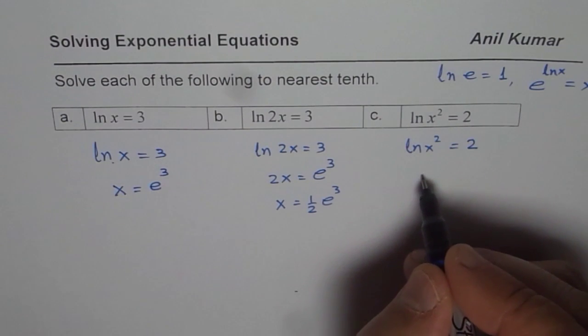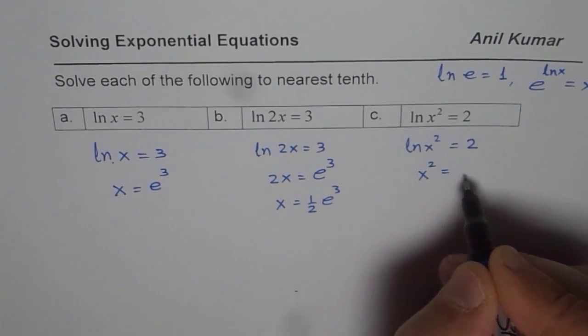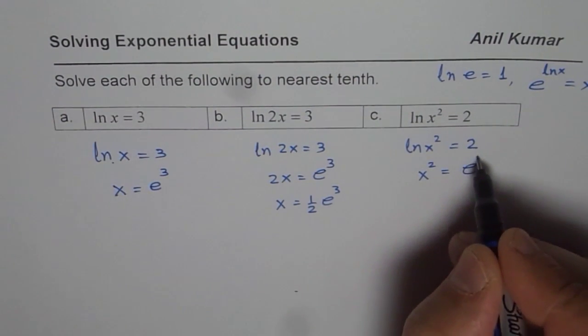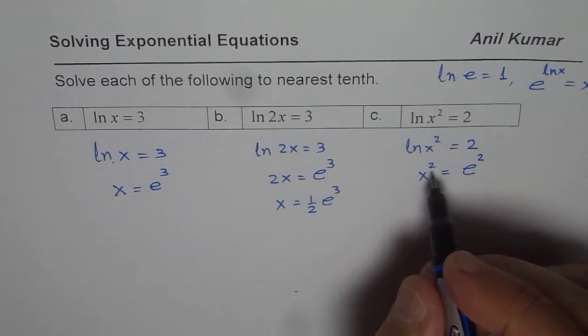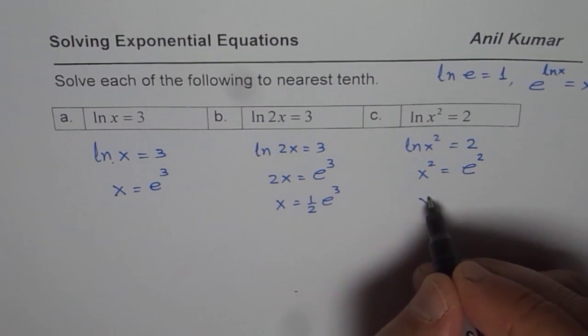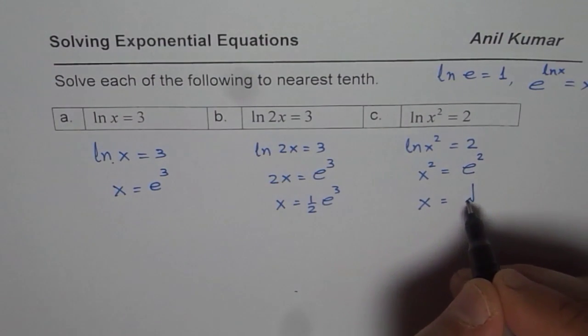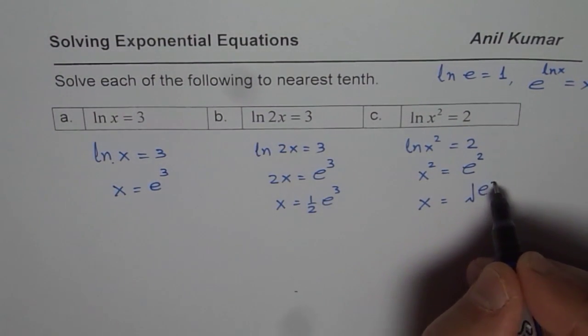In this particular case, we have x squared equals e squared. So what is x equals to? x is equals to square root of e squared.